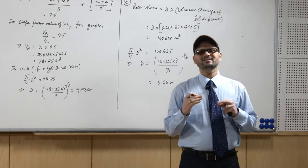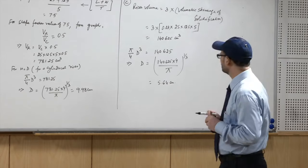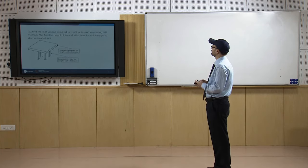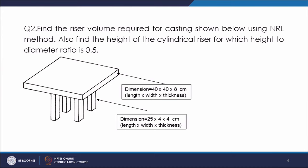These are the different ways of calculating riser dimensions by different methods. The next question is: find the riser volume required for a casting using the NRL method, which is essentially the shape factor method. Also find the height of a cylindrical riser for which the height-to-diameter ratio is 0.5. The casting is a table: a top plate of 40 by 40 by 8 cm with four legs of cross section 4 by 4 and length 25 cm.